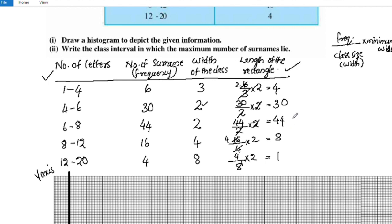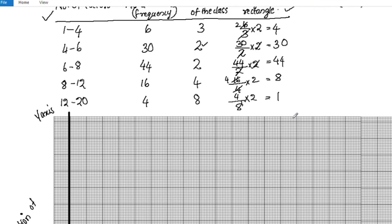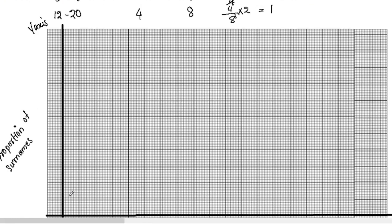For the y-axis units: we have 5 units per division, so 5, 10, and up to 45 units total. We mark the y-axis accordingly up to 45.